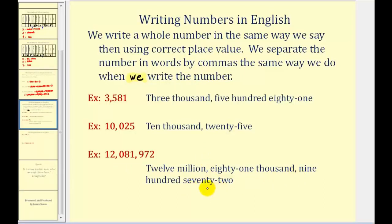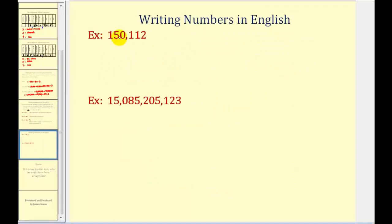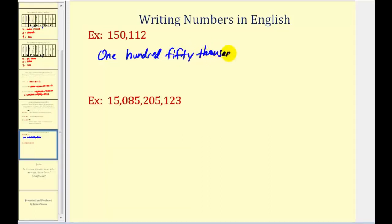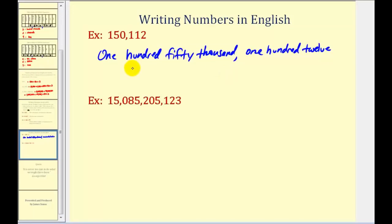Let's go ahead and try a couple of our own. So we have one hundred fifty thousand, one hundred twelve. Remember we should not include the word 'and,' because 'and' represents the decimal point.